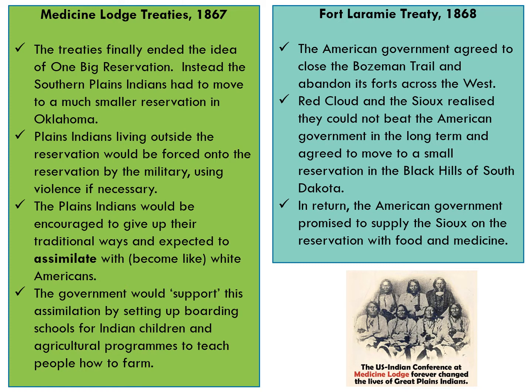In the Fort Laramie Treaty of 1868, the American government agrees to close the Bozeman Trail and abandon its forts across the West. Red Cloud and the Sioux realise that they could not beat the American government in the long term and agree to move onto these smaller reservations in the South Dakota hills. In return, the government promises to supply the Sioux on the reservation with food and medicine — sounds great in theory, but ultimately the government don't keep these promises consistently, and that will develop further in the burst.